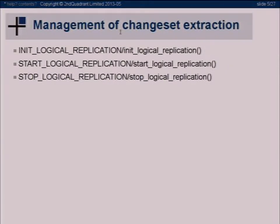How do you work with logical replication? There are three high-level steps. First, you say you want to do logical replication — on the SQL level you call init_logical_replication with some parameters, or on the wal sender level a different command. Then most commonly you call start_logical_replication, which starts streaming out changes. On the SQL level it gives you all changes up to now; on the streaming format it just streams until you say stop. And if your replica goes down and you remove it, you can drop the replication slot.